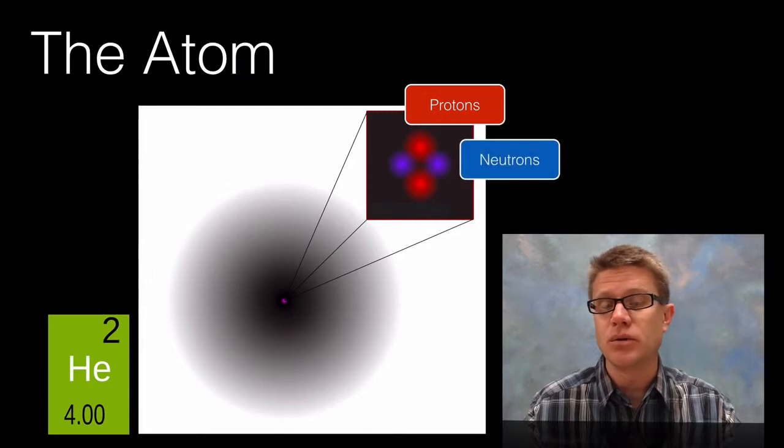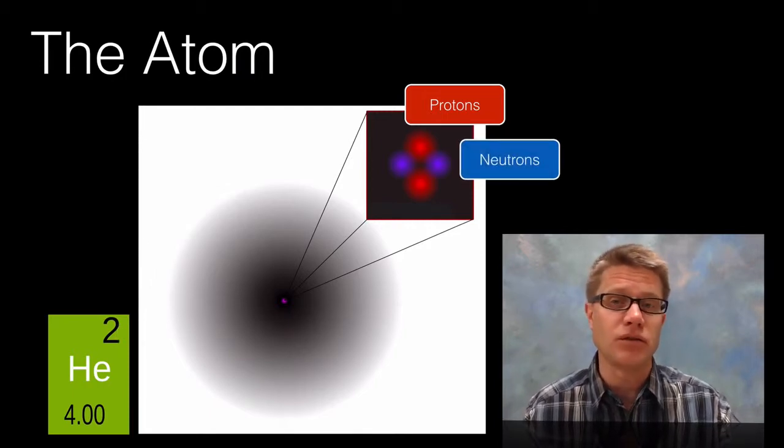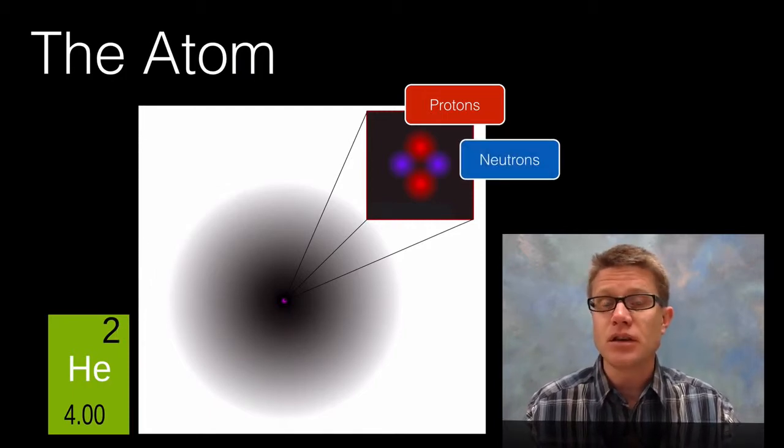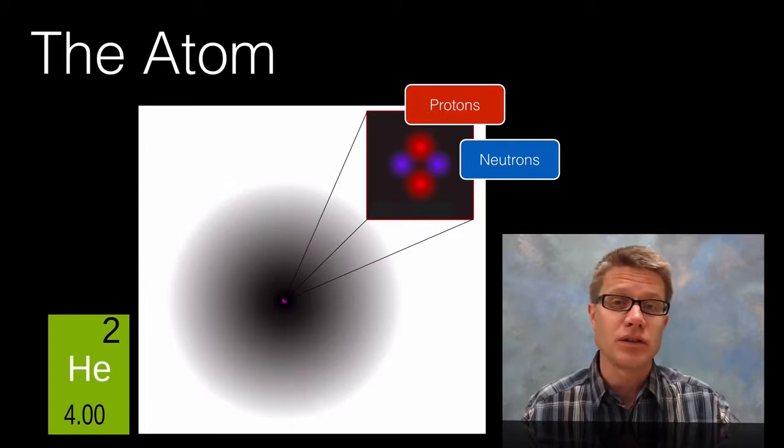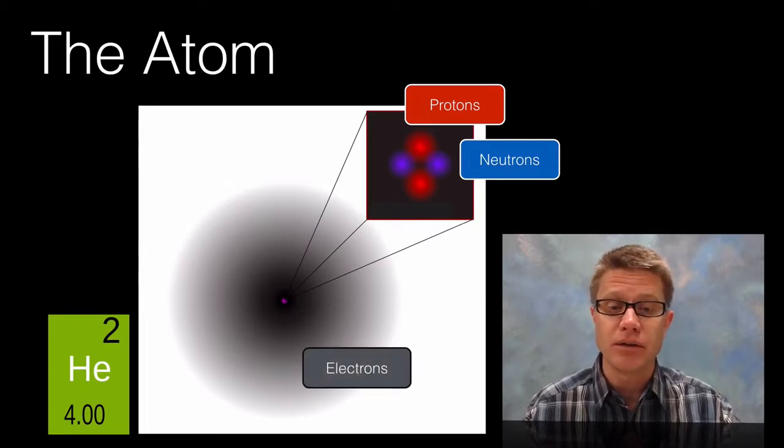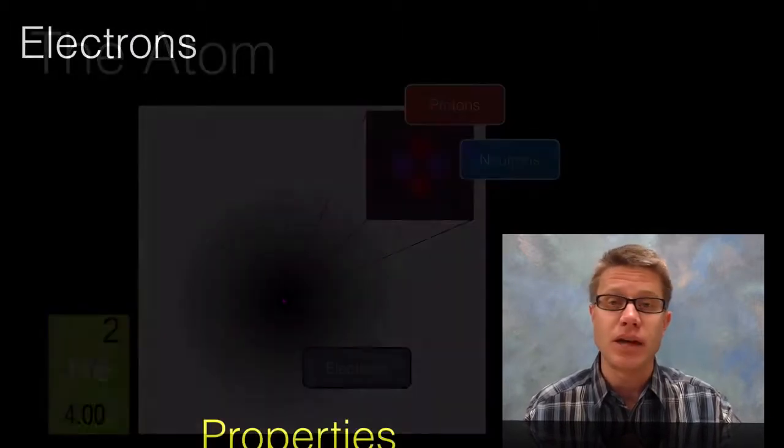And so we would know in helium for example that we are going to have 2 neutrons. Now since the number of protons and electrons are the same in a neutral atom, we can figure out that we have got these electrons moving around the outside.